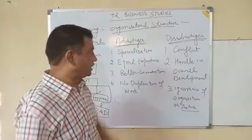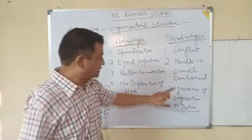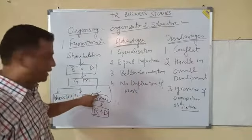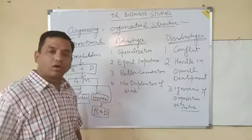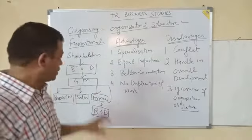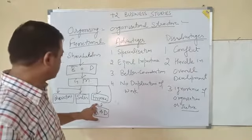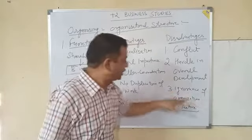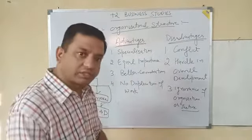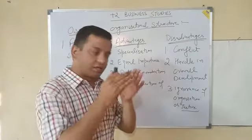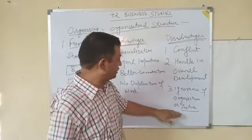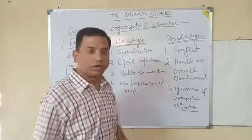The third disadvantage is that sometimes in order to achieve their own departmental goal — like the head of the finance department just trying to show finance is the best — the finance department may simply ignore the organizational goal. Instead of achieving the organizational goal, they start achieving only their own department's goal. This is the third and last disadvantage of functional structure.